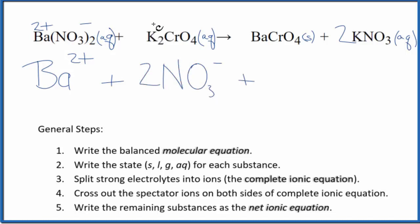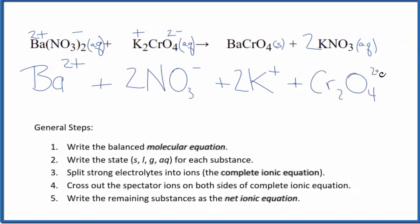We have potassium in group 1, so that has a 1+, and the whole chromate ion is 2-. So we have 2 potassium ions, and then we have the chromate ion. So these are our reactants in the complete ionic equation.